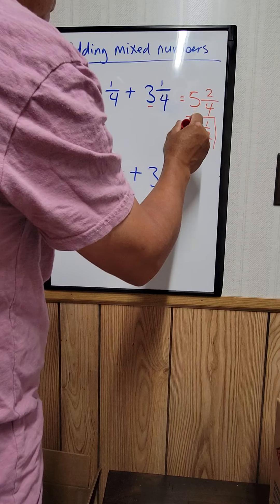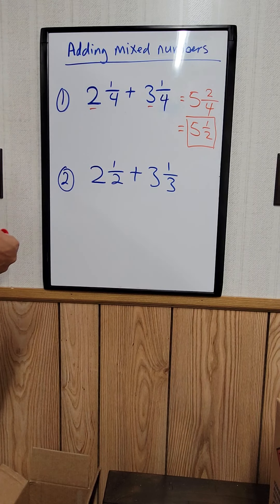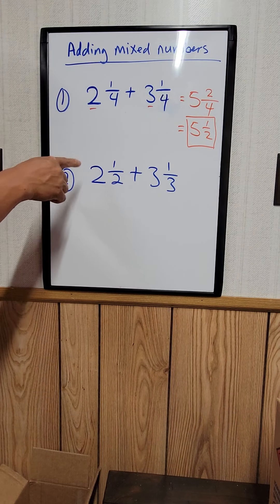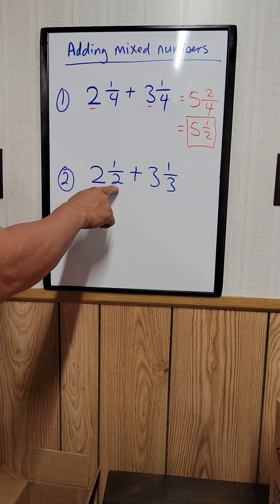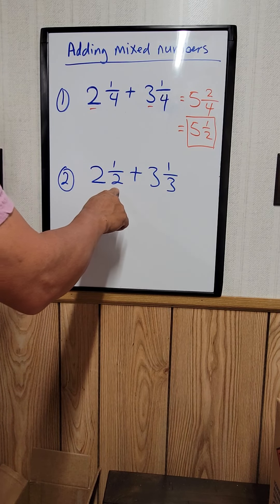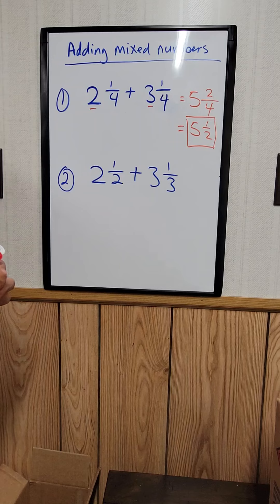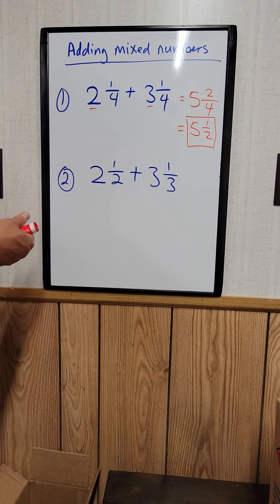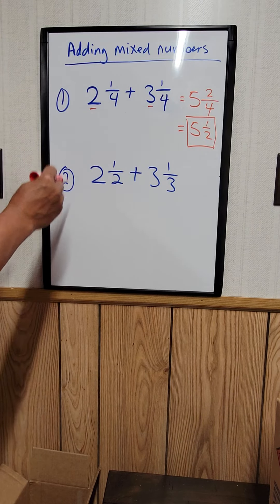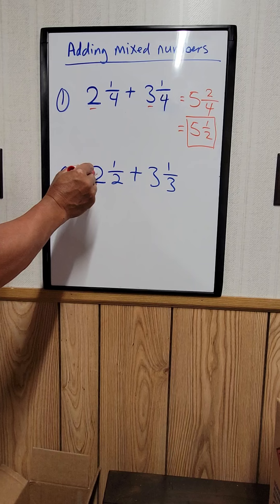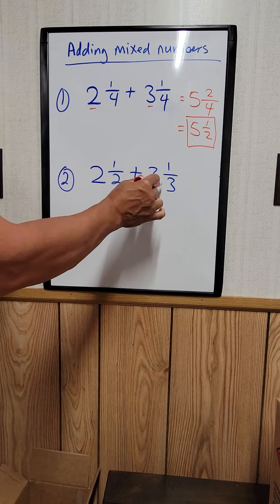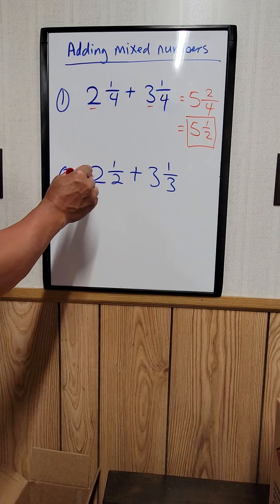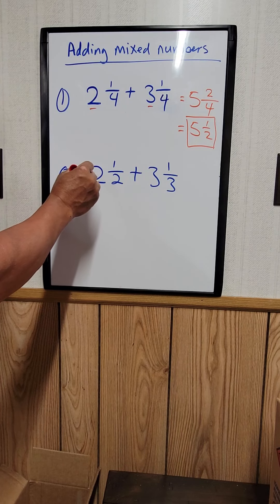How about example number two: 2 1/2 plus 3 1/3. Since the fraction parts are not the same, 1/2 is not equal to 1/3, so therefore what you need to do is convert the mixed numbers into improper fractions for both of them before you can do the addition.